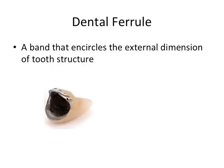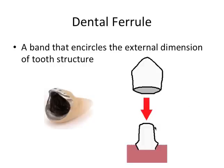Here we have a tooth that has been prepared to receive a crown, and the coronal structure has been reduced so that a certain thickness of crown material can fit on top without being overly bulky. In this case there isn't any decay, there is no root canal treatment, no post and core.